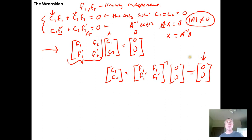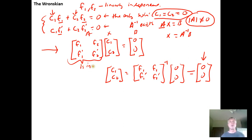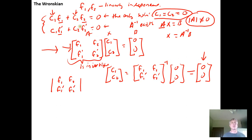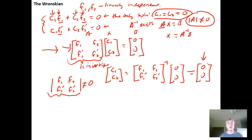Here's the key point: we know that c₁ = c₂ = 0 is the unique solution to this system if f₁ and f₂ are linearly independent — the trivial solution is the only solution. Because of that, we know this matrix must be invertible. And if it is invertible, the determinant of that matrix cannot equal 0. So by the linear independence of the two functions, this determinant cannot be 0.